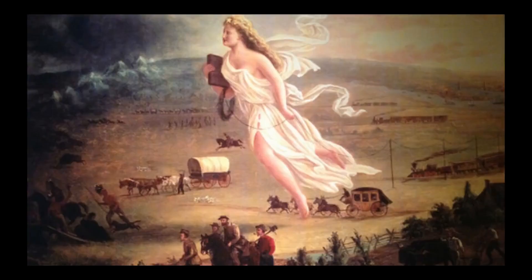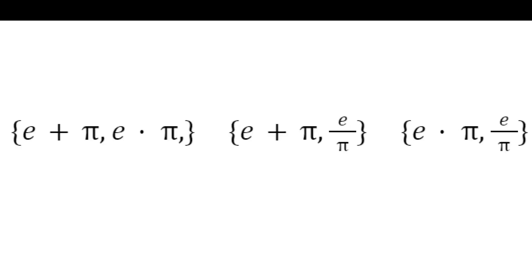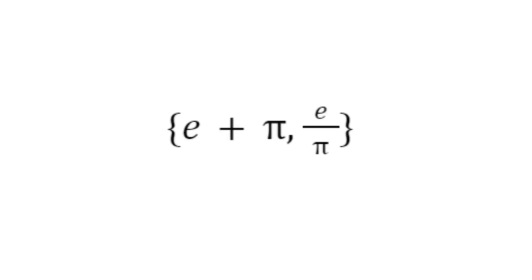Interestingly enough you can expand this idea and also show that the set e plus pi, e divided by pi and e times pi has at most one rational number. You do this by showing that each pair of numbers in the set has at most one rational number. However, we did one of the pairs.